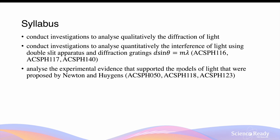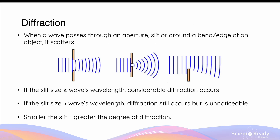Hello everybody, this video is on diffraction. When waves such as light pass through a small aperture, slit, or around the bend or edge of an object, they experience scattering. This phenomenon of a wave is called diffraction. The size of the slit relative to the wavelength of the wave determines the extent to which the scattering or diffraction will occur.